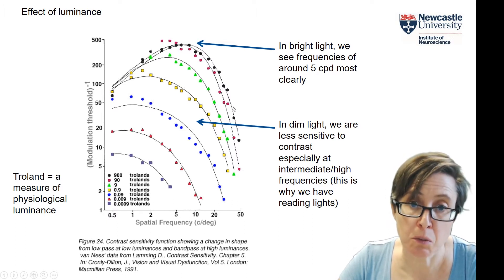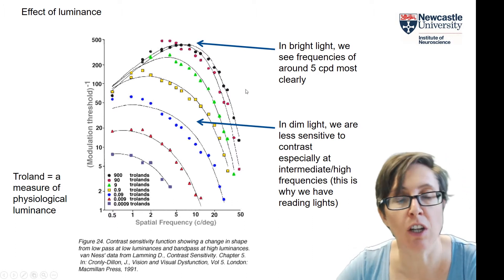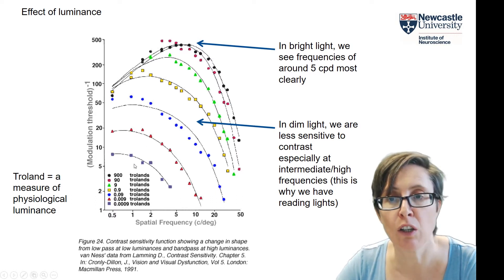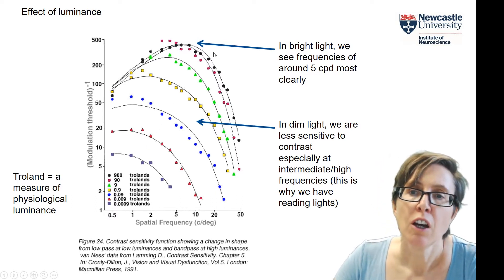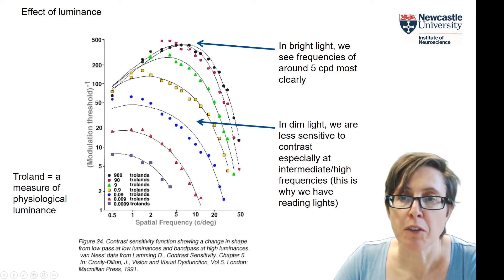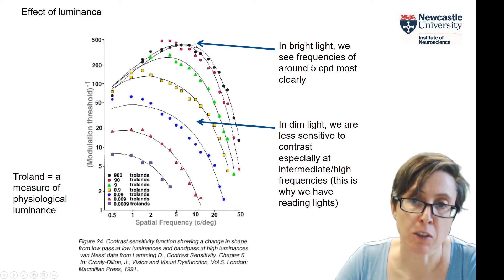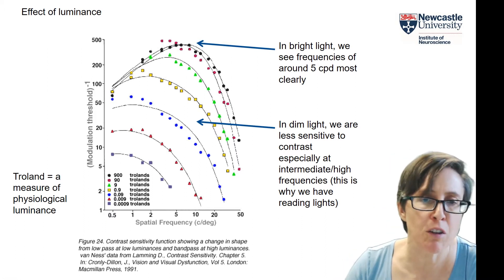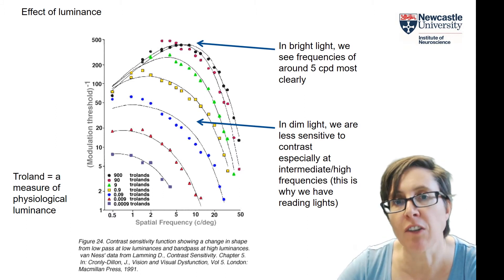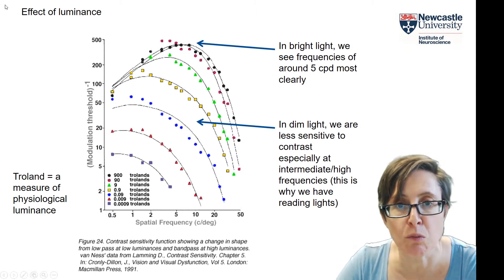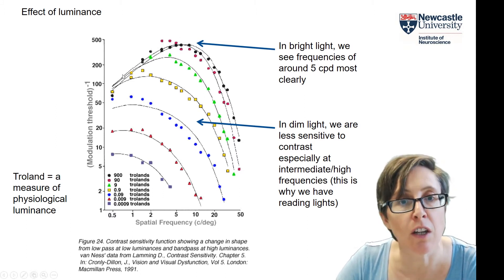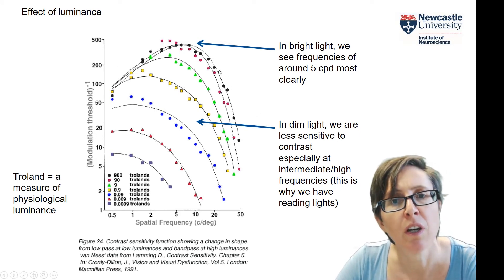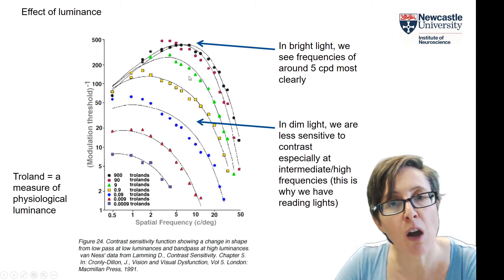The black symbols are for the highest illuminance measured, and as you go down through the colours you reach lower and lower luminances. In bright light this observer sees frequencies around 5 cycles per degree most clearly — it was 3 in the earlier plot, but it varies between individuals, typically anywhere from 2 to 10 cycles per degree in bright light. Then you have the roll-off at lower and higher frequencies as discussed.